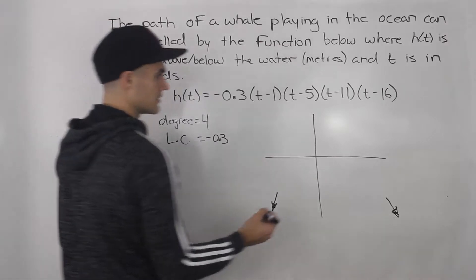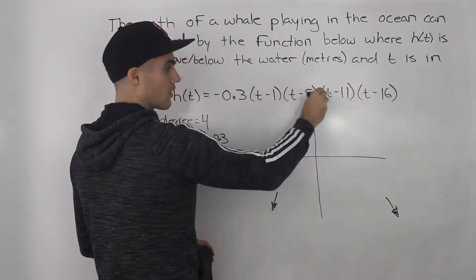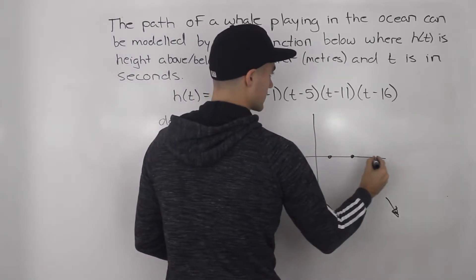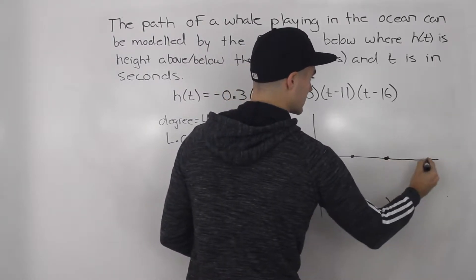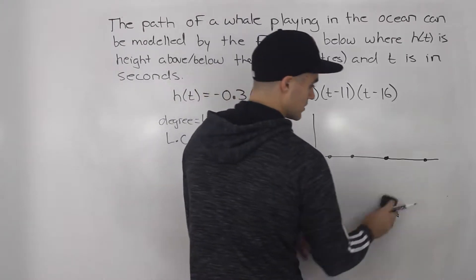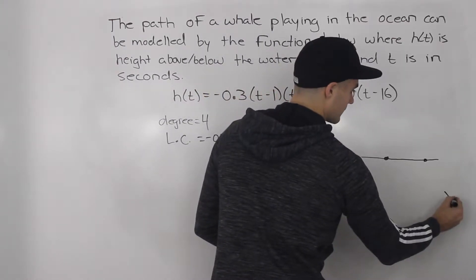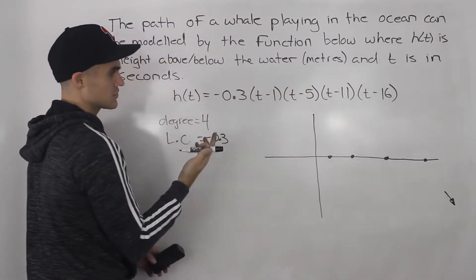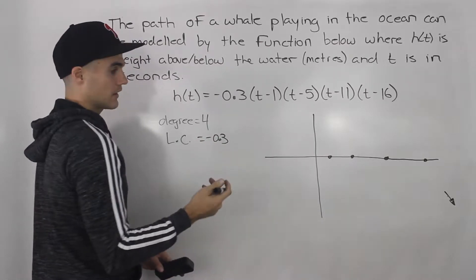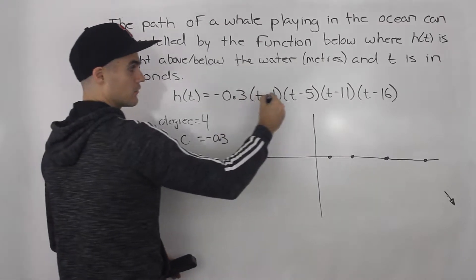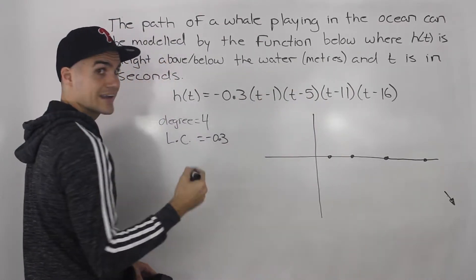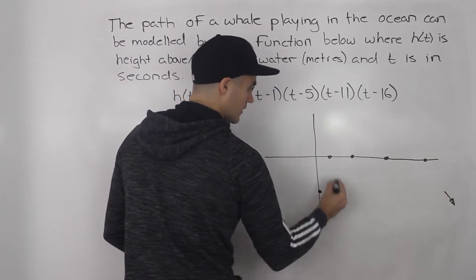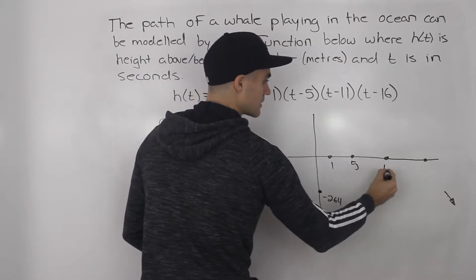The x-intercepts come directly from the factored form: t = 1, t = 5, t = 11, and t = 16 seconds. For the h-intercept, we plug in t = 0, which gives us negative 264. So the h-intercept is at -264, well below the other features of the graph.